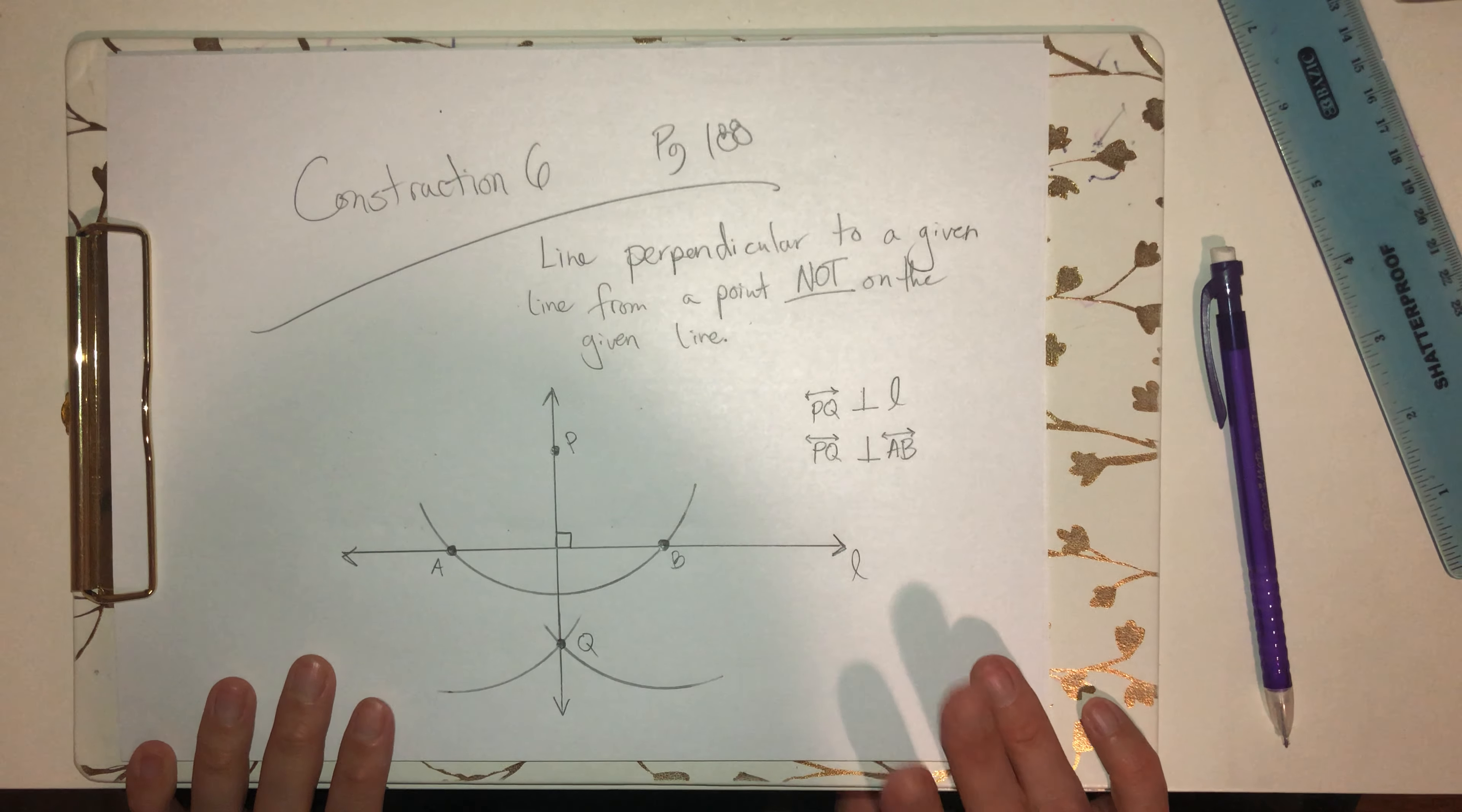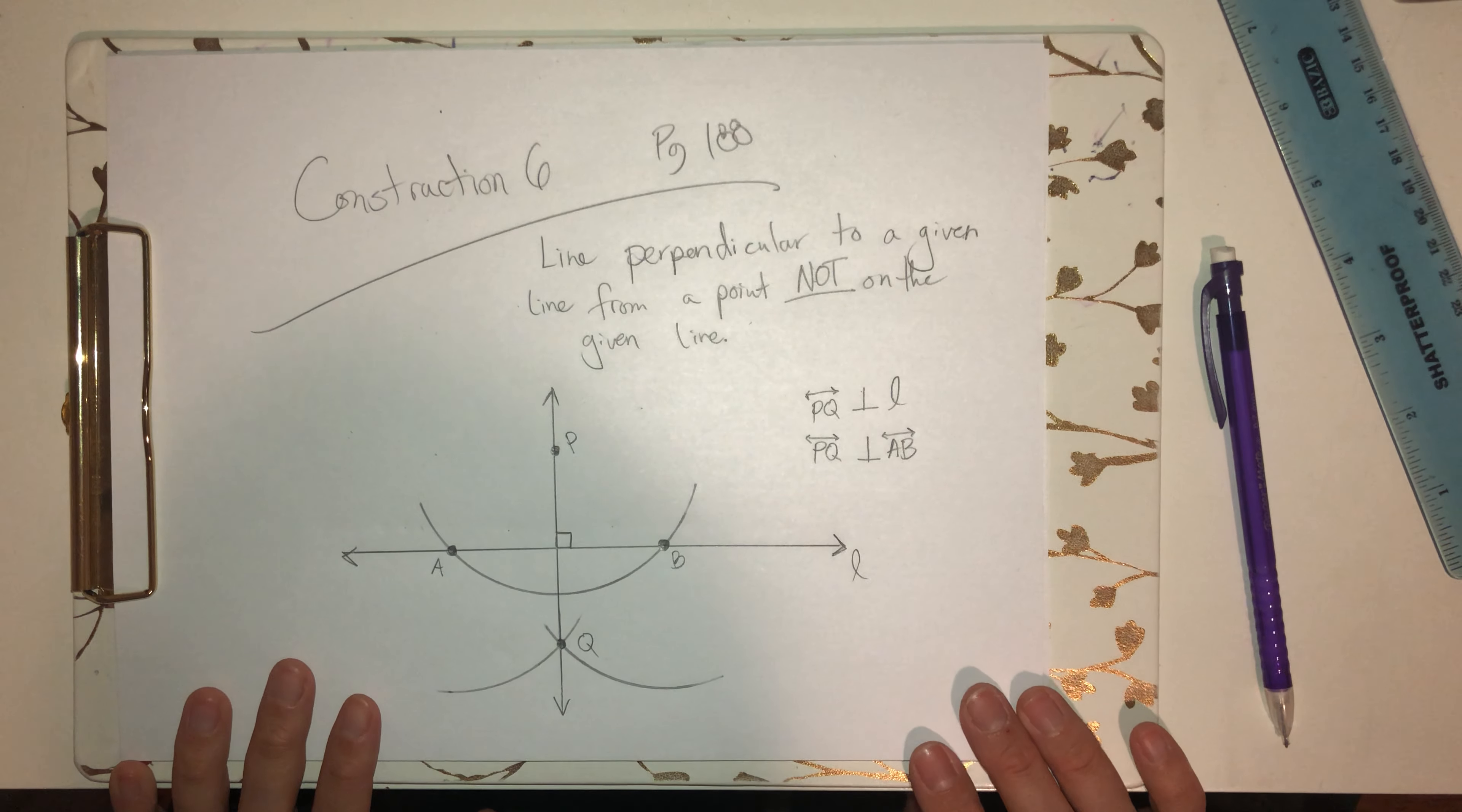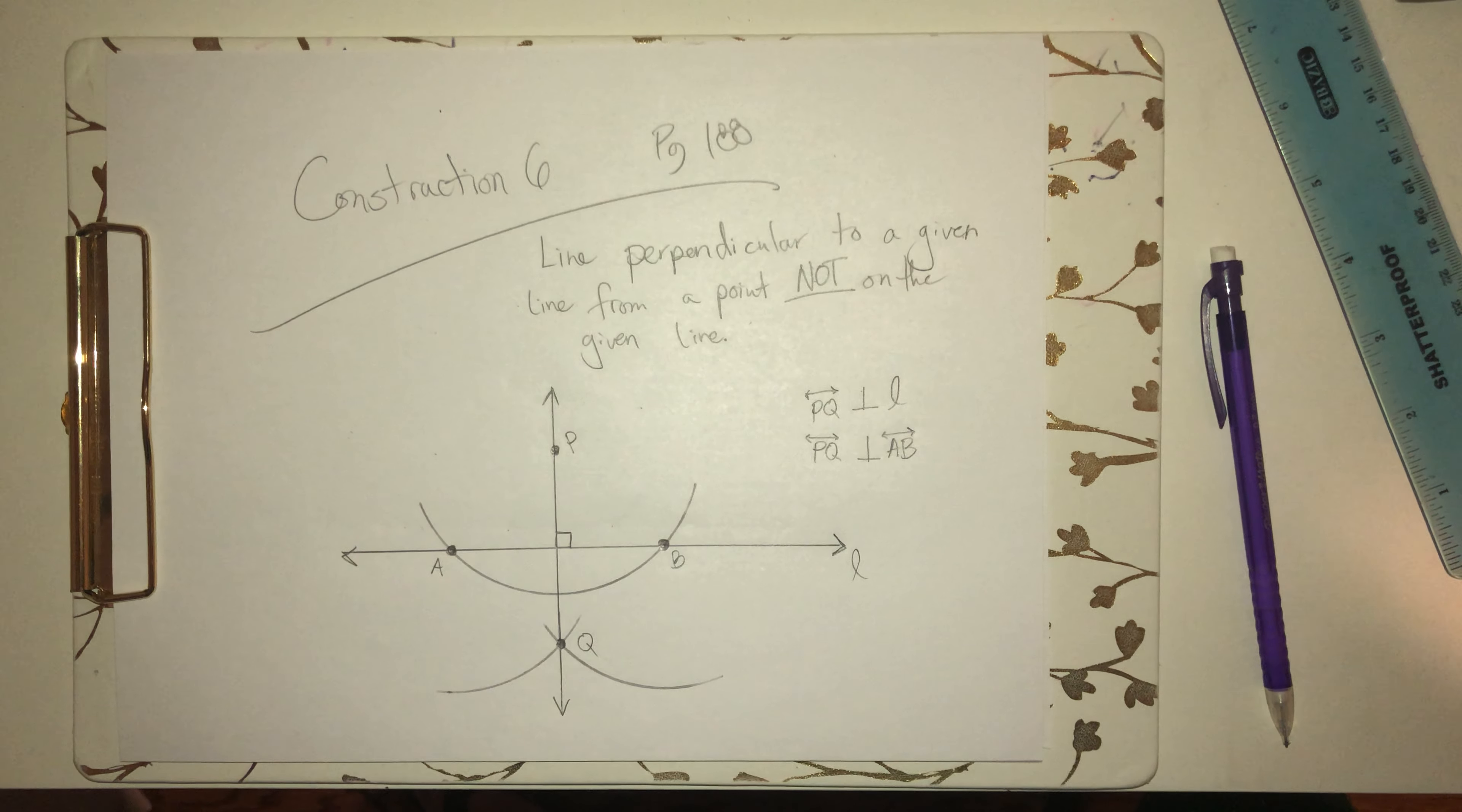And that's all there is to it. So if you ever need to construct a perpendicular line to a given line that has to go through a point not on the given line, construction six is your jam. That's all for now. Stay tuned for more coming up soon.